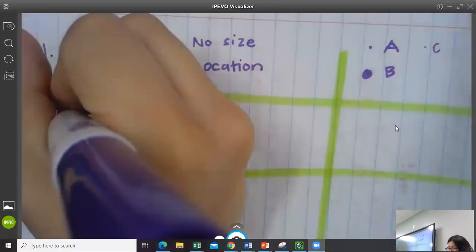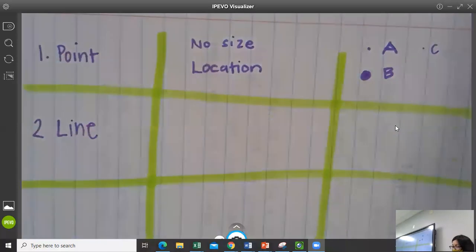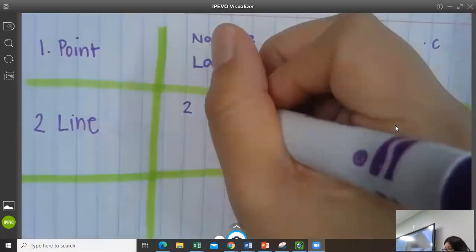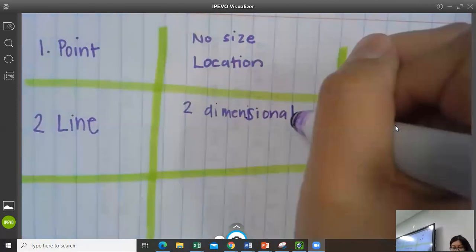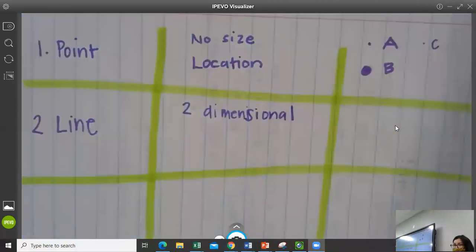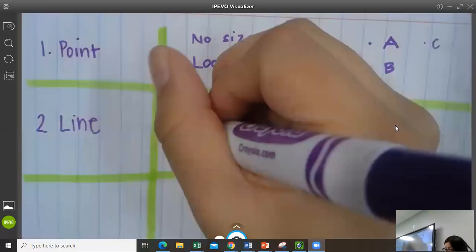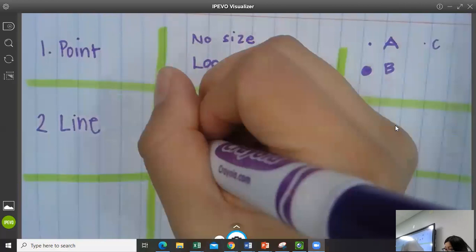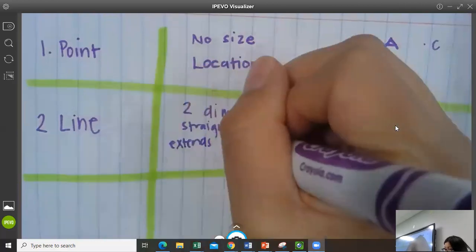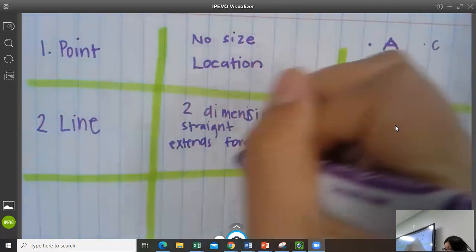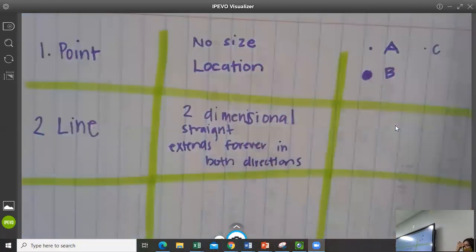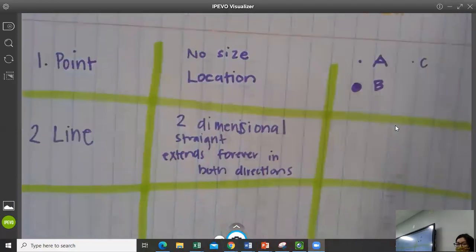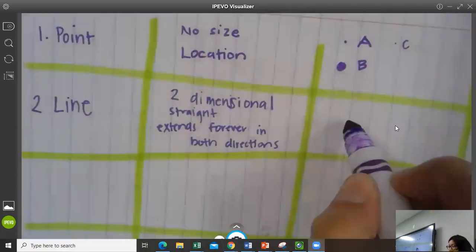Number two is a line. Now a line is two dimensional. A point is one dimensional. Now what you want to remember about the line is that it is straight and it extends forever in both directions. There's no beginning. There's no end. It just extends and extends and it keeps going because it literally keeps going forever. And I mean, that's not going to fit on your paper. You can't fit forever on your paper.